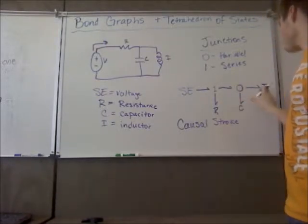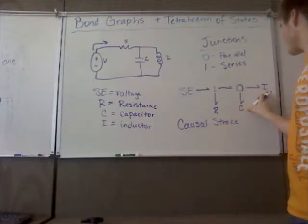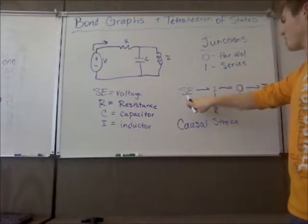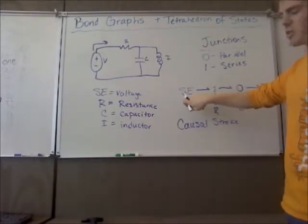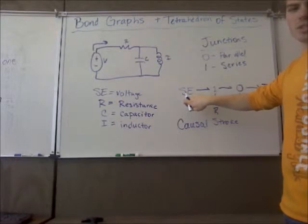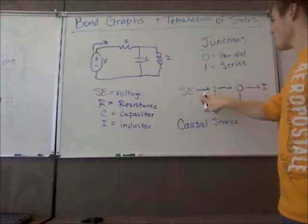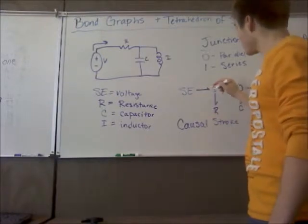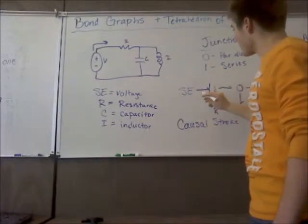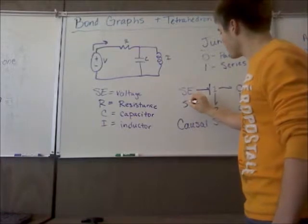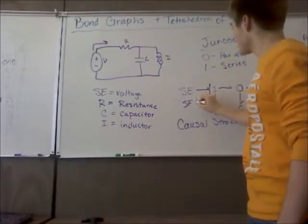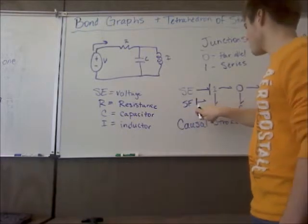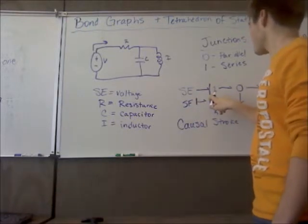So in this system, it will either be a capacitor or an inductor. And you've got your source effort, which is where you always start when you're assigning causal strokes. An effort, a source effort, is always going to push. So your causal stroke is going to be away. If this were a source flow, you would assign your causal stroke on the front side towards the flow. But for an effort, you always assign it away.